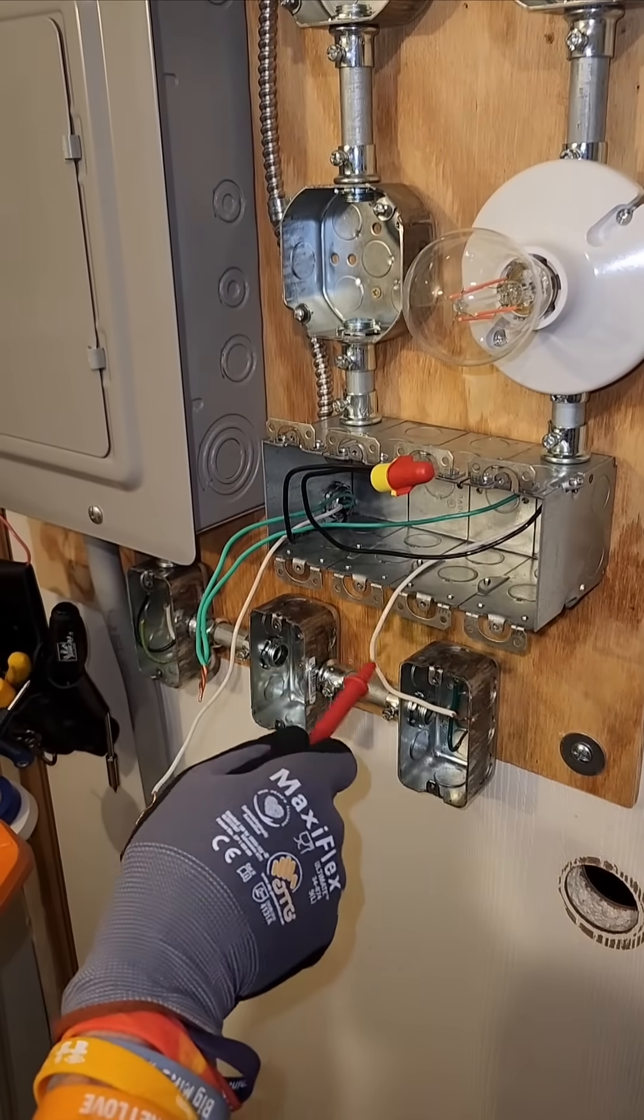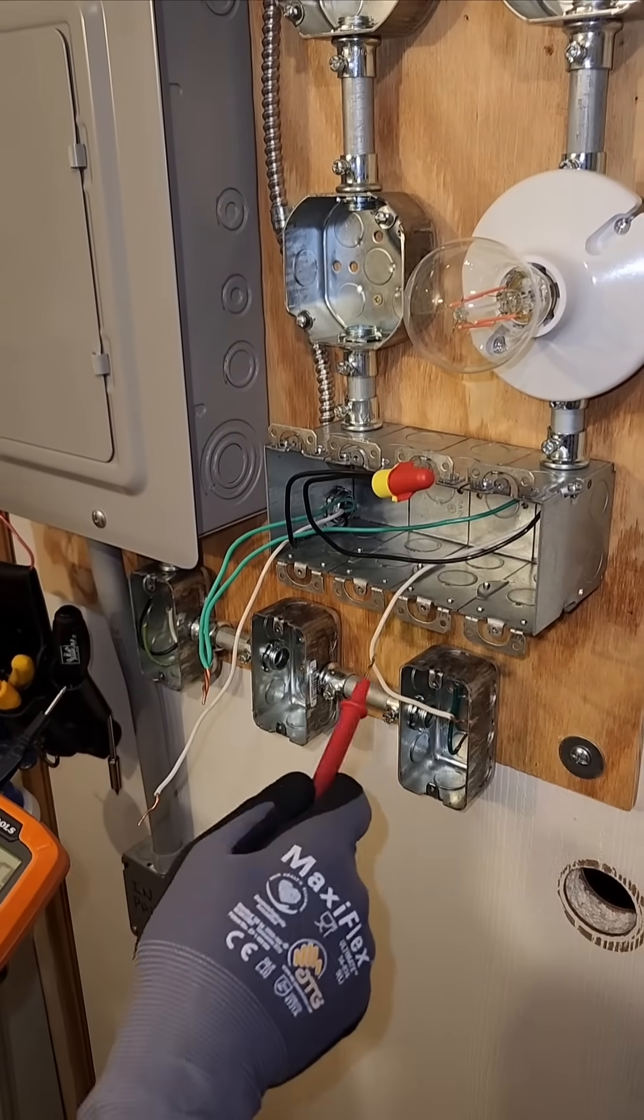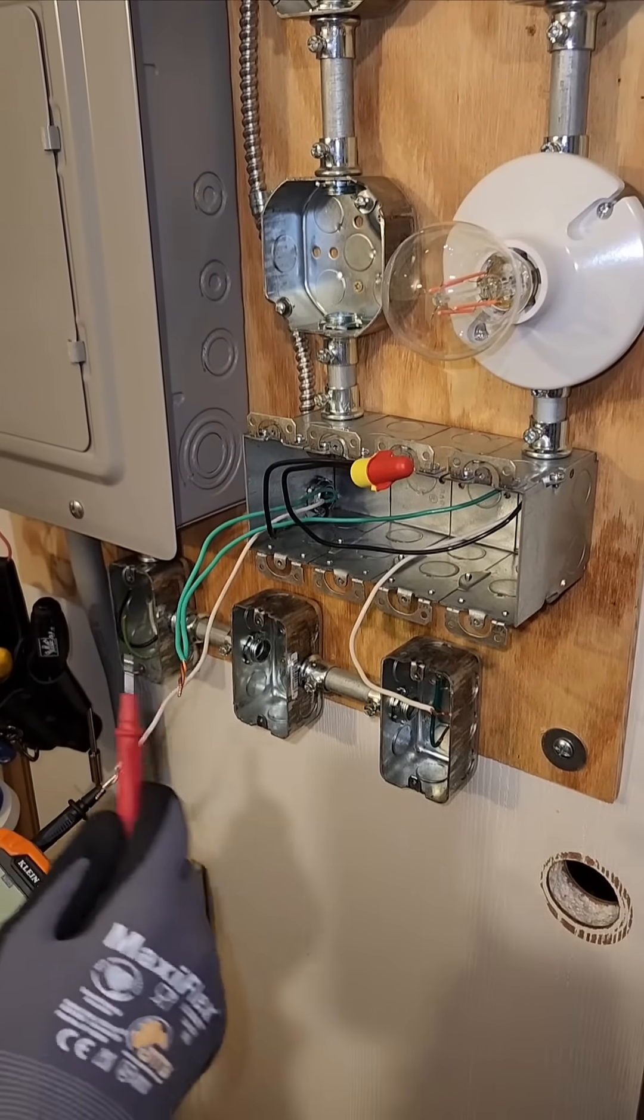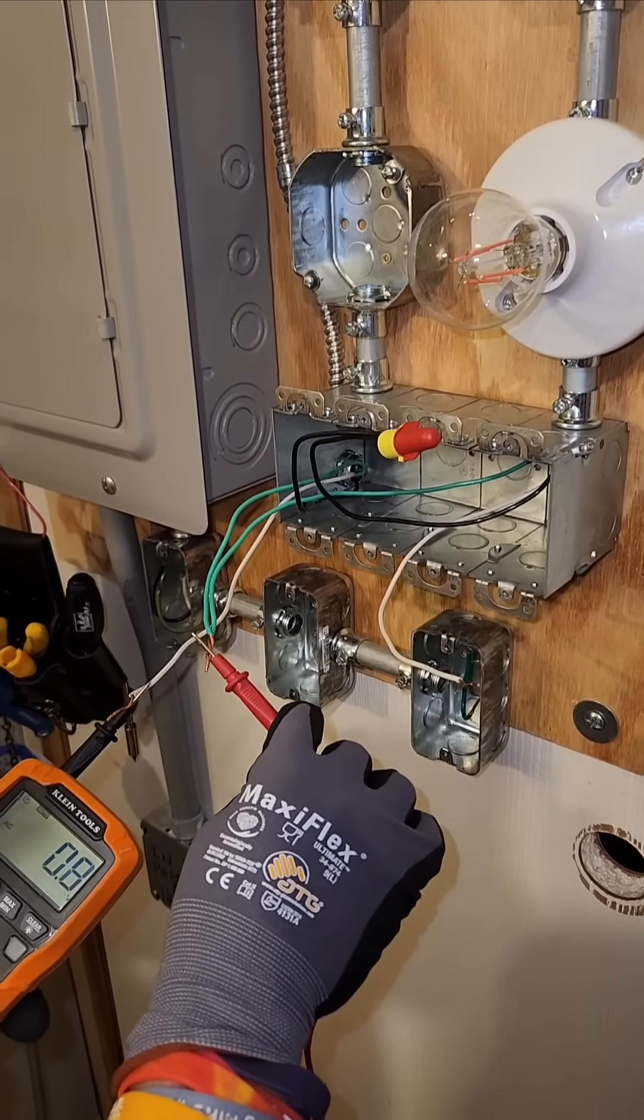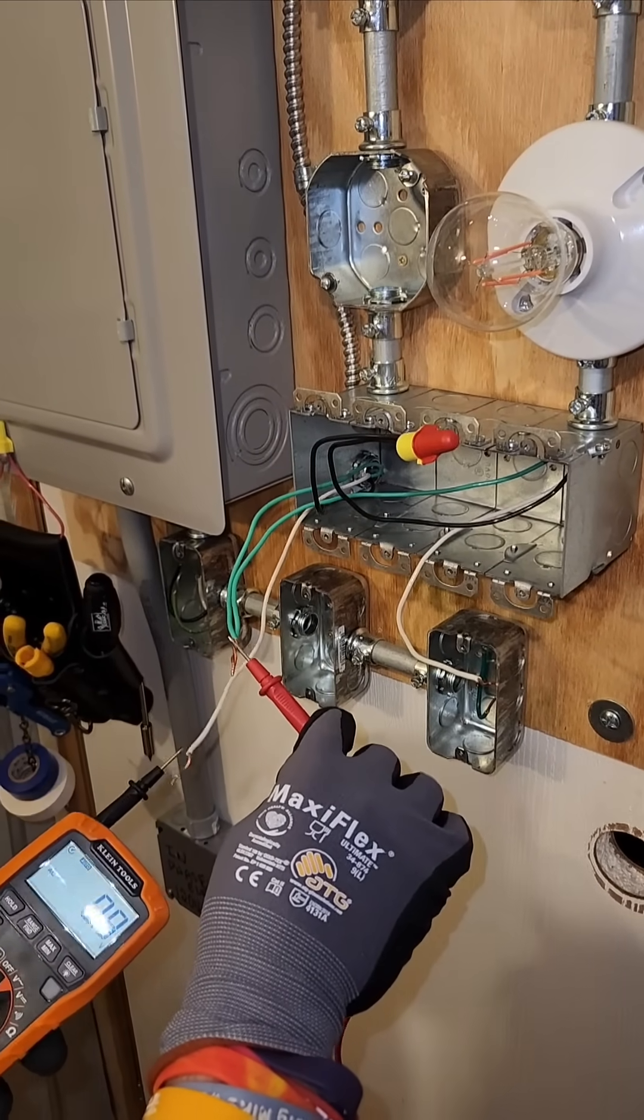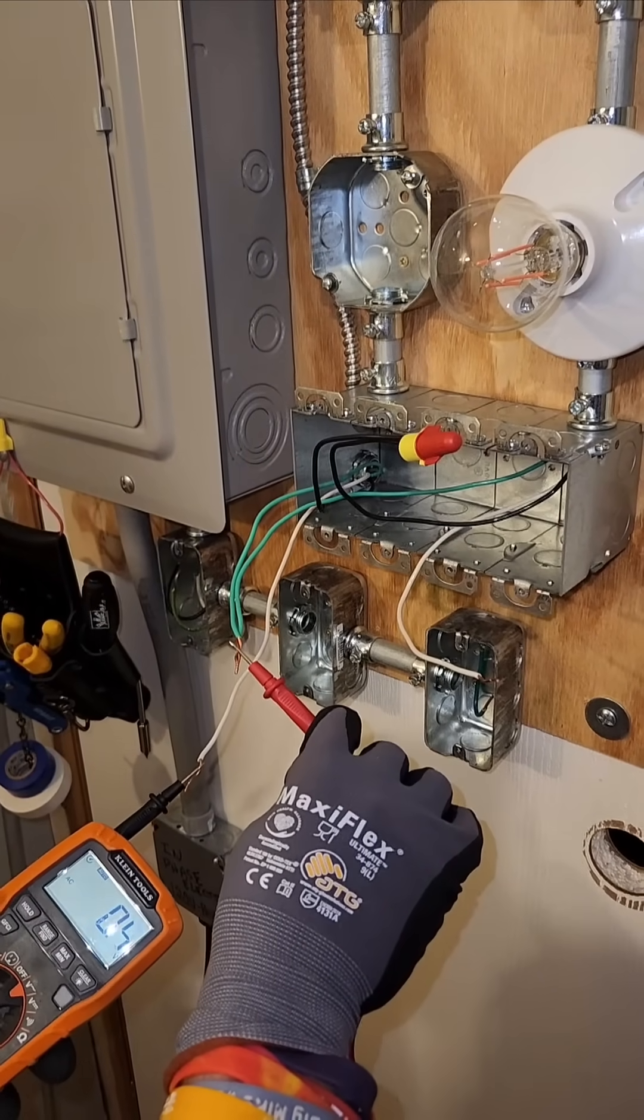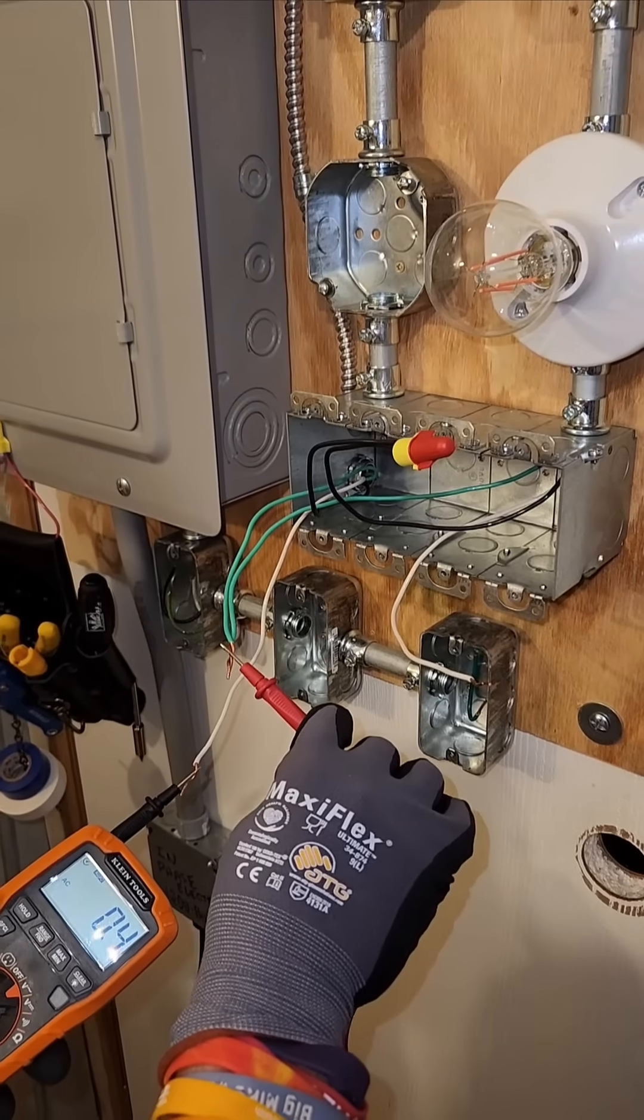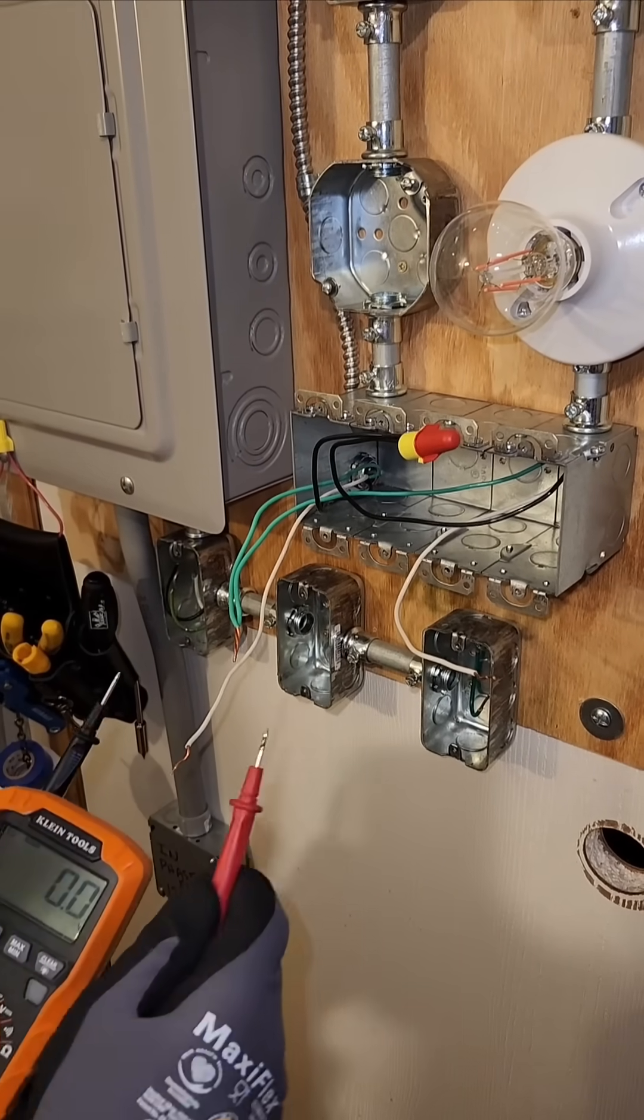So in theory this might as well be a black wire or an ungrounded conductor. But our panel ground we will still read approximately zero volts because it still has ground potential when this one doesn't.